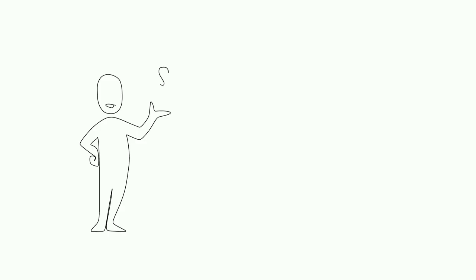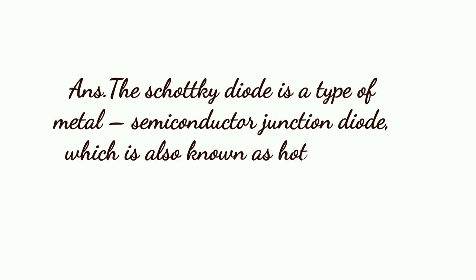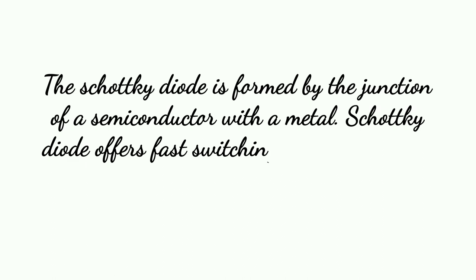Define Schottky Diode. The Schottky Diode is a type of metal-semiconductor junction diode, which is also known as hot carrier diode, low voltage diode, or Schottky barrier diode. The Schottky Diode is formed by the junction of a semiconductor with a metal. It offers fast switching action and has a low forward voltage drop.